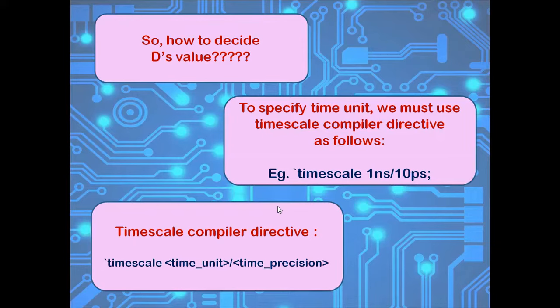It's written as `timescale time_unit / time_precision. In the example shown, we have taken 1 nanosecond as time unit with a time precision of 10 picoseconds.